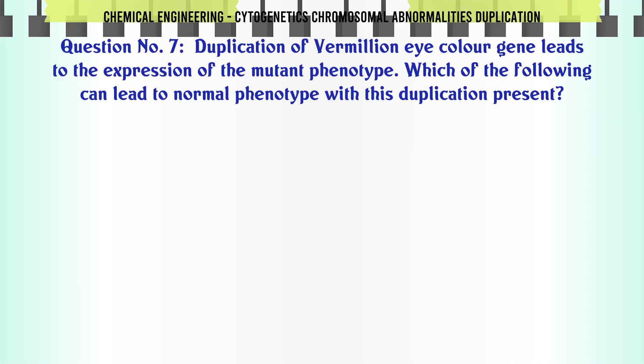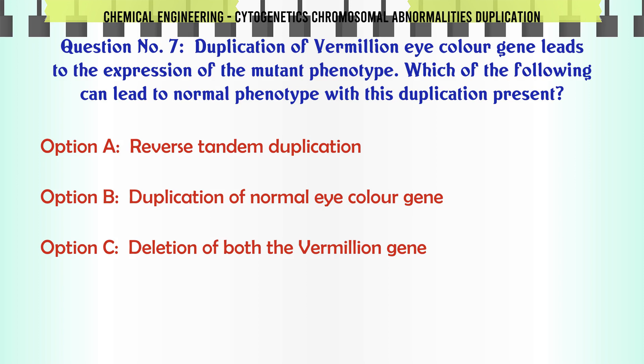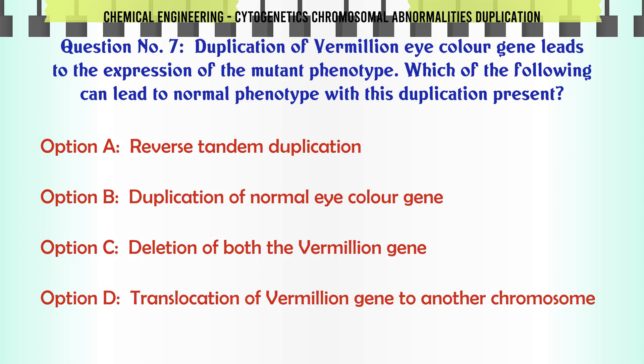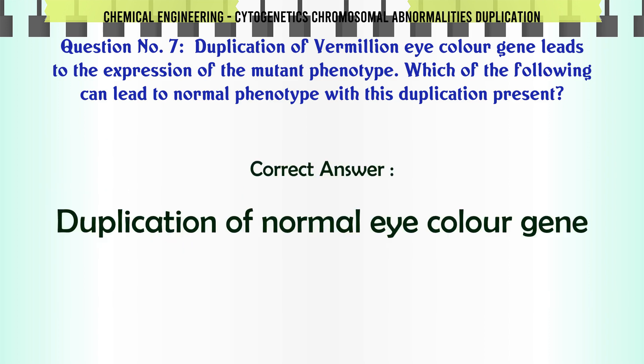Duplication of the vermilion eye color gene leads to expression of the mutant phenotype. Which of the following can lead to normal phenotype with this duplication present? A: reverse tandem duplication. B: duplication of normal eye color gene. C: deletion of both the vermilion genes. D: translocation of the vermilion gene to another chromosome. The correct answer is duplication of normal eye color gene.